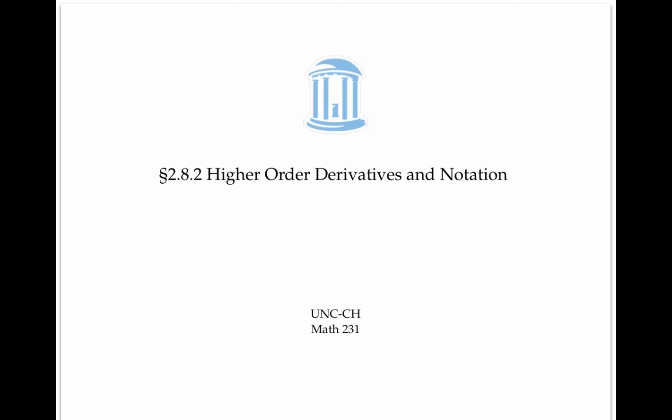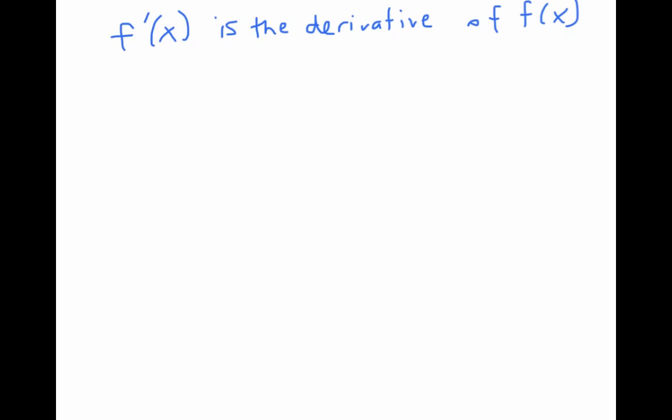This video introduces higher order derivatives and notation. We've seen that f prime of x denotes the derivative of the function f of x, but f prime of x is also itself a function. So we can take its derivative, that would be f prime prime of x, which is usually written instead as f double prime of x.